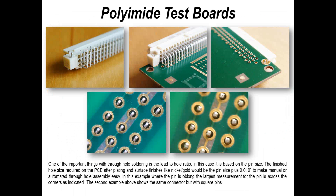We've got two different connector pins, and one of the important things is that when you're considering automatic soldering, the computer driving the laser or the soldering iron tip is dumb — it doesn't know anything until you tell it better. So if the pin shape or pin size is different, that may have an impact not on the quality, but on the yield from your process. Don't let purchasing companies change materials unless you give approval to do so.